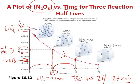You get the same half-life whether you start with 0.06 or 0.03 concentration. Half-life does not depend on the initial concentration, and that indicates this is a first-order reaction.